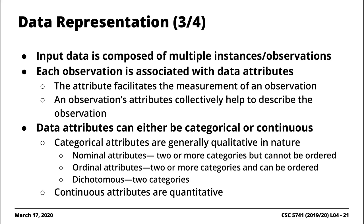When you're referring to categorical attributes, there are three main forms. First, there are nominal attributes — these are discrete values that represent two or more categories, such as rich, poor, comfortable, or good, bad, neutral. The key trait of nominal attributes is that they represent two or more categories.